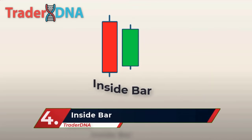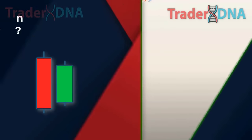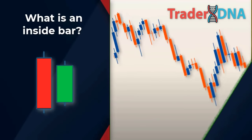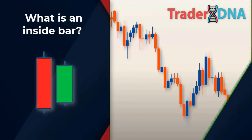Fourth: Inside Bar. The inside bar is a popular reversal or continuation candle formation that only requires two candles to present itself. This pattern is a direct play on short-term market sentiment, looking to enter before the big moves that may take place in the market. The inside bar shows a reluctance of prices to progress above or below the preceding candle's high and low, indicating market indecision.